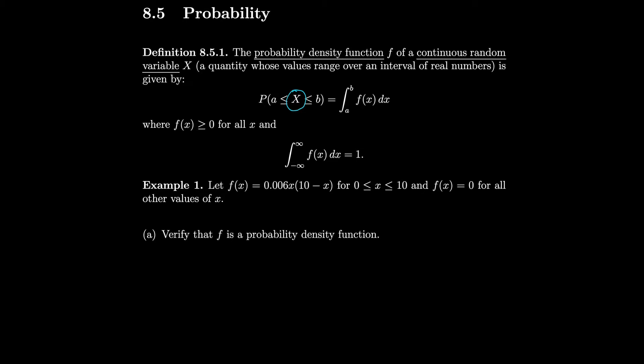However, the probability density function uses a lowercase x. This probability density function f acts on just a regular independent variable in the real numbers. So that probability density function associated with the continuous random variable talks about the probability of any of those events occurring. The quantity lowercase x is a totally separate quantity than uppercase X.